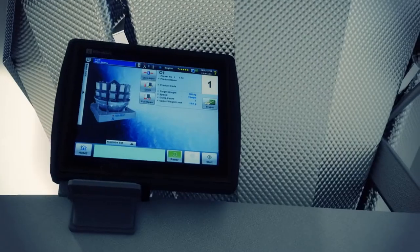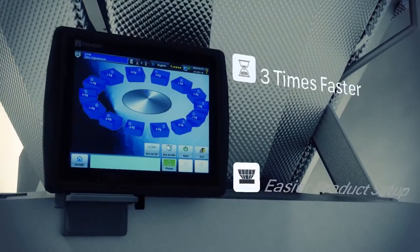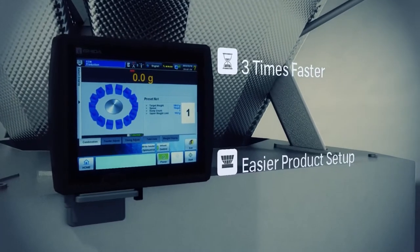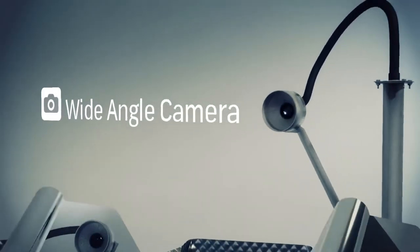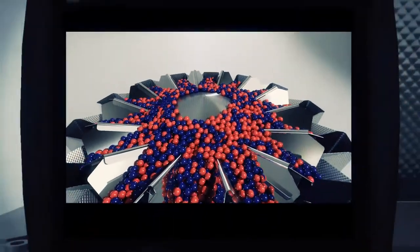The new RV software makes touch screen operation three times faster and allows easier product setup using only five key parameters. Also, the enhanced wide-angle camera on top of the weigher allows you to optimize the product flow.